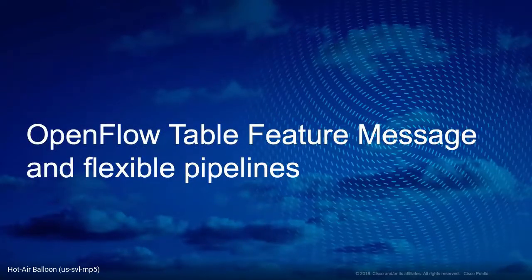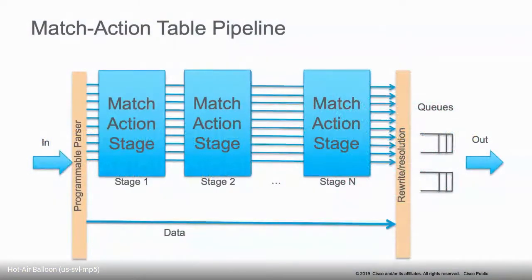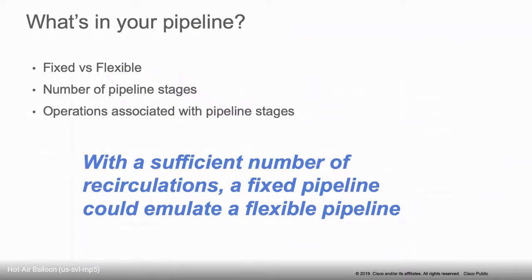Switching gears slightly, let's talk about the Table Feature Message and how we manage flexible pipelines. Our abstraction really comes down to what do you have in your pipeline — what are the capabilities of your ASIC? Is the ASIC fixed or is there some flexibility? How many pipeline stages do you have, and what kind of operations can you do in each stage? Here's a general statement: with a sufficient number of recirculations, a fixed pipeline could emulate a flexible pipeline.